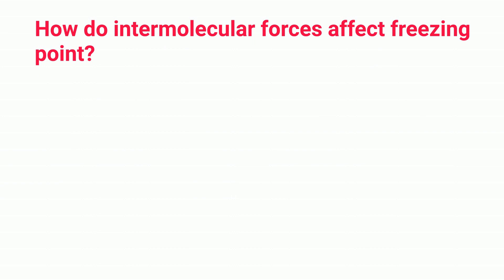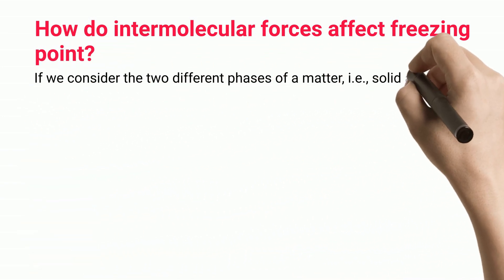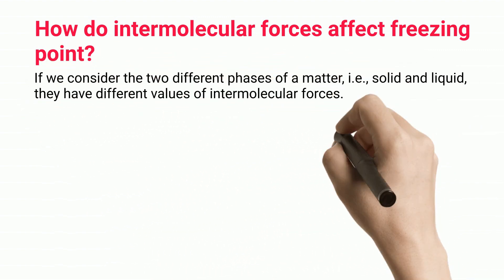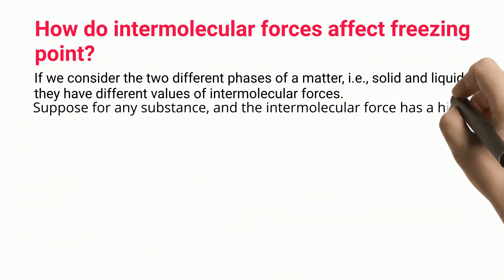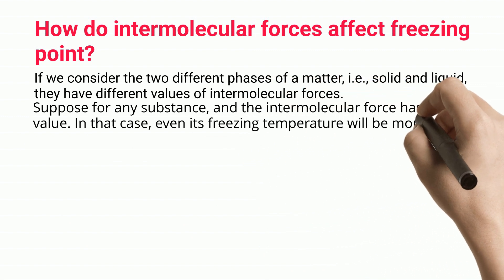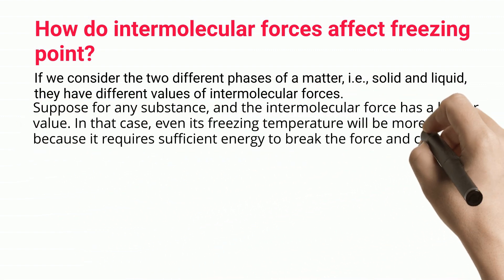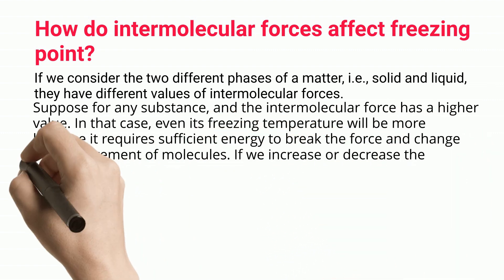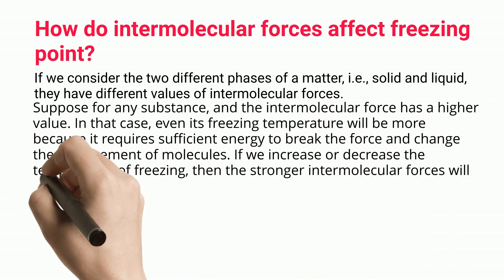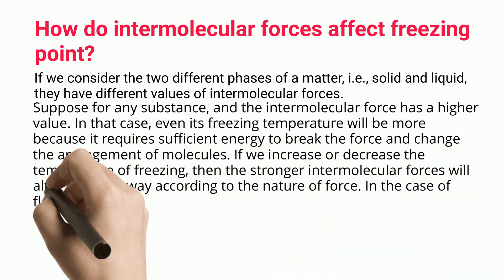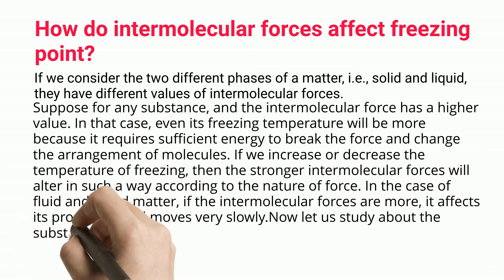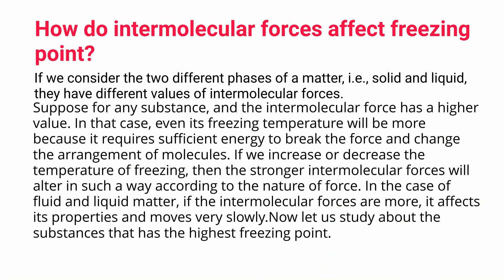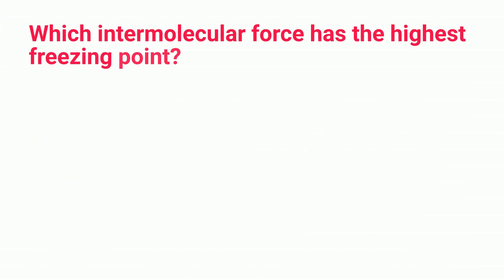Considering the two different phases of matter — solid and liquid — they have different values of intermolecular forces. If the intermolecular force of a substance is higher, its freezing temperature will also be more, because it requires sufficient energy to break the force and change the arrangement of molecules. If we increase or decrease the freezing temperature, the stronger intermolecular forces will alter accordingly. In fluid and liquid matter, if the intermolecular forces are more, the substance moves very slowly.